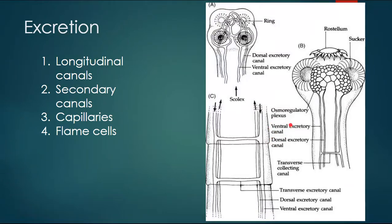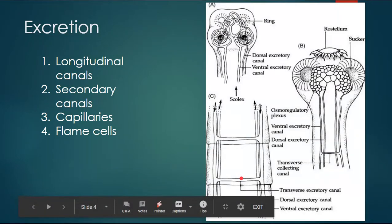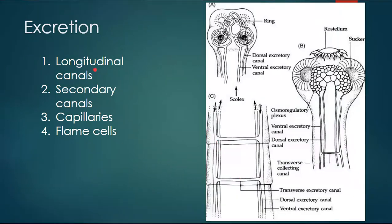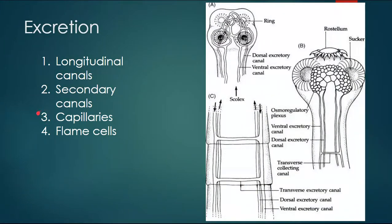Each segment has a dorsal excretory canal and a ventral excretory canal. The secondary canals are the transverse collecting canals. The longitudinal canals — both dorsal and ventral — run parallel on both sides, and the ventral canals are joined to each other in every segment through transverse collecting canals.